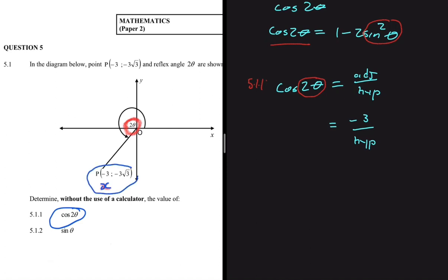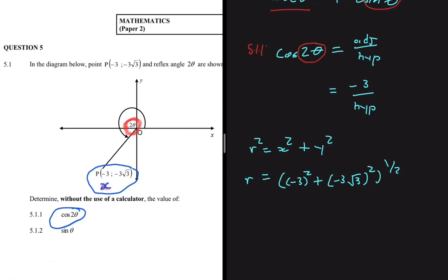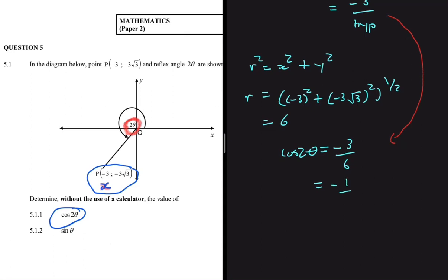We calculate r using r² = x² + y², so r² = (−3)² + (−3√3)², giving r = 6. Therefore, cos of 2θ equals −3 divided by 6, which simplifies to −1/2. As simple as that, we have solved the problem.